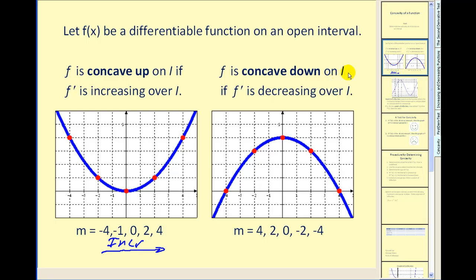F is concave down on an interval if the derivative is decreasing over the interval. Remember the derivative measures the slope of the tangent line. So if we drew a tangent line here, the slope would be four; right here it would be two; here it would be zero and so on. If we take a look at these slopes or derivatives at these given x values, they are decreasing in value, therefore it is concave down.